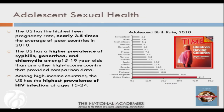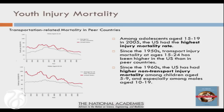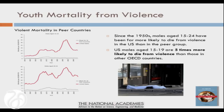Teen pregnancy — the US leads high-income countries in teen pregnancies, with the highest rates of STDs among teens and the highest rates of HIV infection among teens among high-income countries. Injury mortality as well: we have the highest injury mortality rates both from unintentional injuries like car accidents and from intentional injuries. This was true back in the 1950s — it's a long-standing part of American life that our kids are more likely to die in car accidents and through violence.